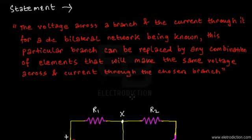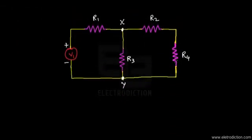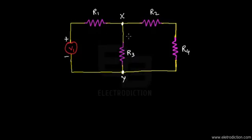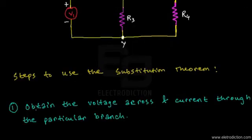According to the theorem, we need to know the amount of current flowing through the branch XY and the voltage developed across it. With the help of the data we have from voltage source V1, we can use network analysis to simplify the network. Step 1 states: obtain the voltage across and current through the particular branch.